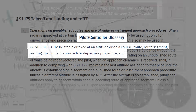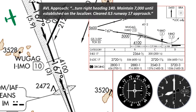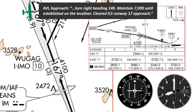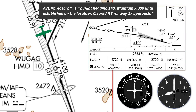Besides, the concept of stability is a bit subjective. Are we established on this approach as soon as the needle starts coming in, when we start our turn inbound, or only when the needle is centered and we're no longer turning? Remember, we need to lose 2,000 feet before WUGAG, so we don't want to wait too long to descend if we can help it. The definition is fuzzy — can we do better than this?